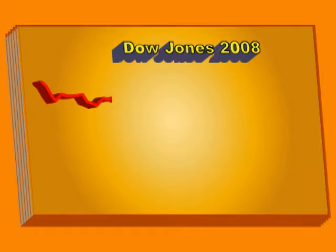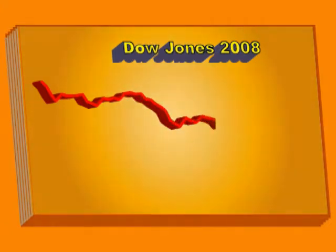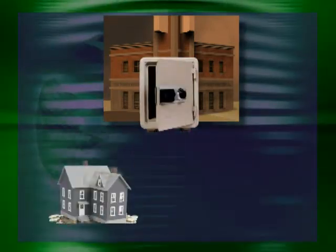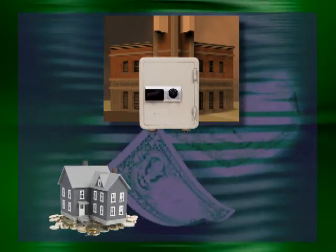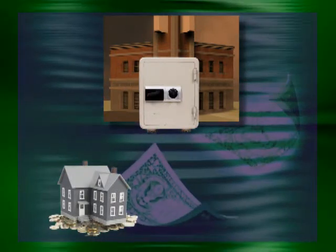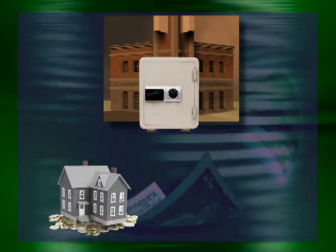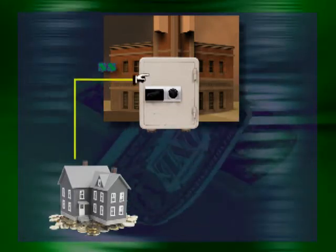The stock market plunged, and hundreds of thousands of jobs were lost. The root of the economic crisis was the problem around mortgages. A mortgage is a loan — a bank lends you the money to buy a house and charges you interest on the loan. As you pay back the mortgage, you not only pay back the amount that you borrowed, you pay back the interest on the loan.